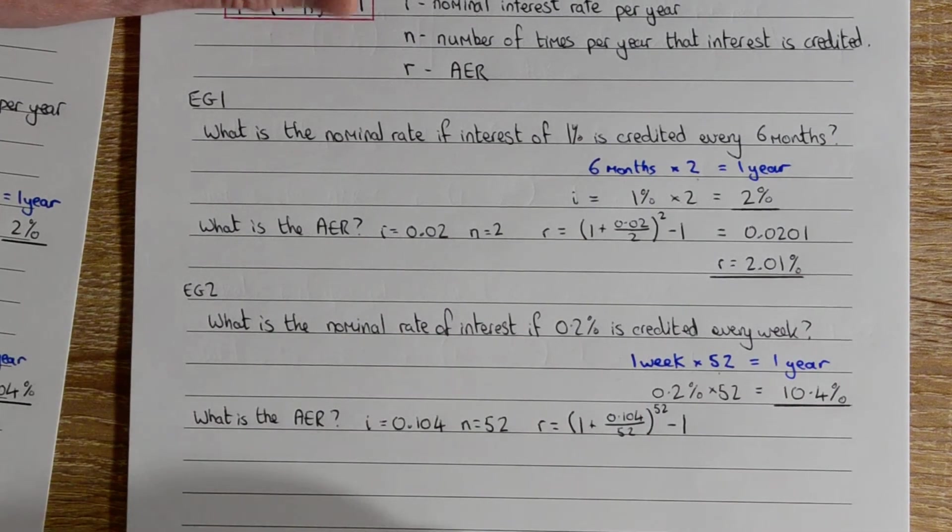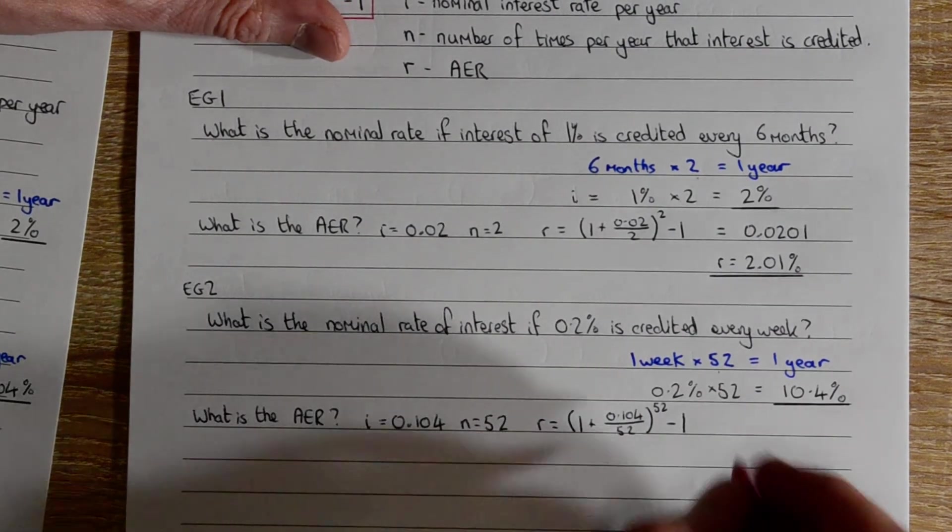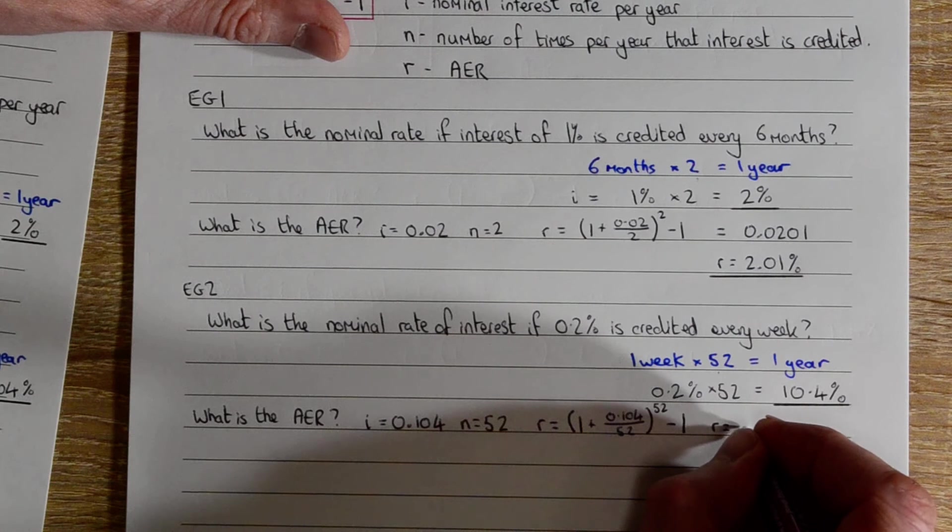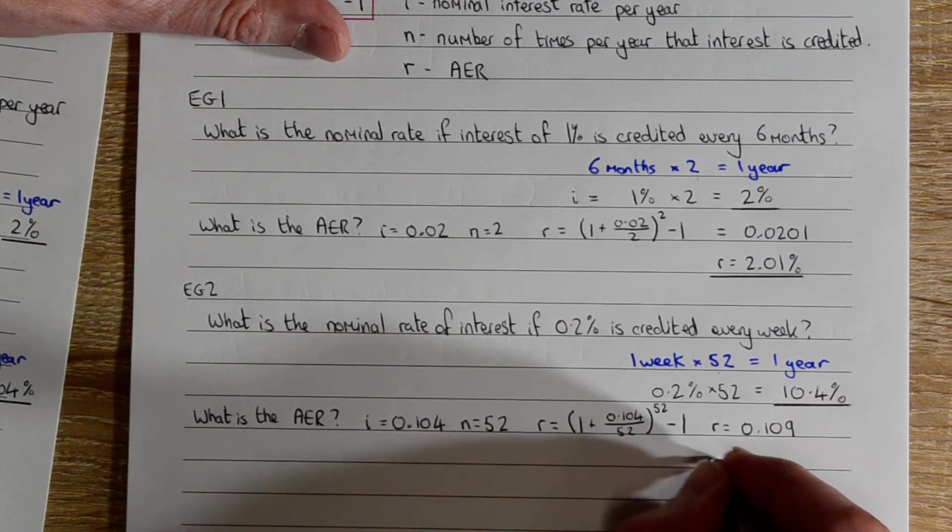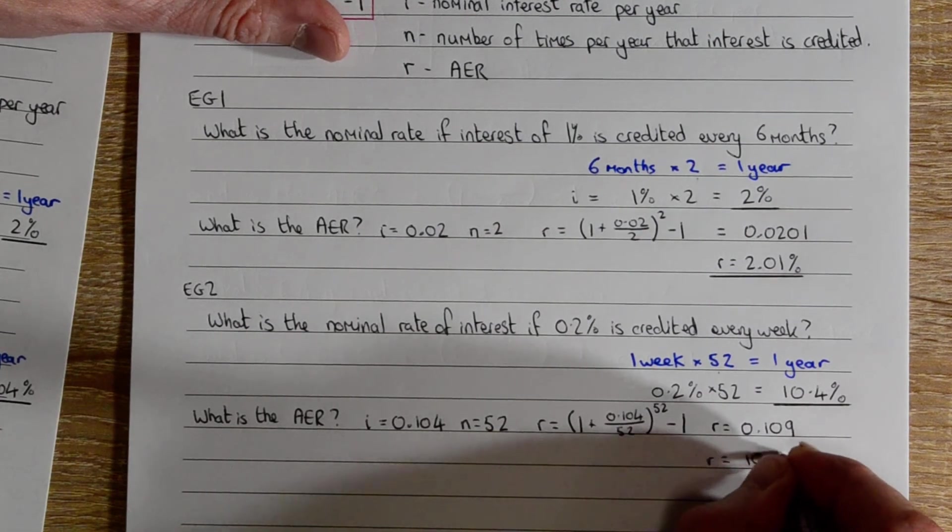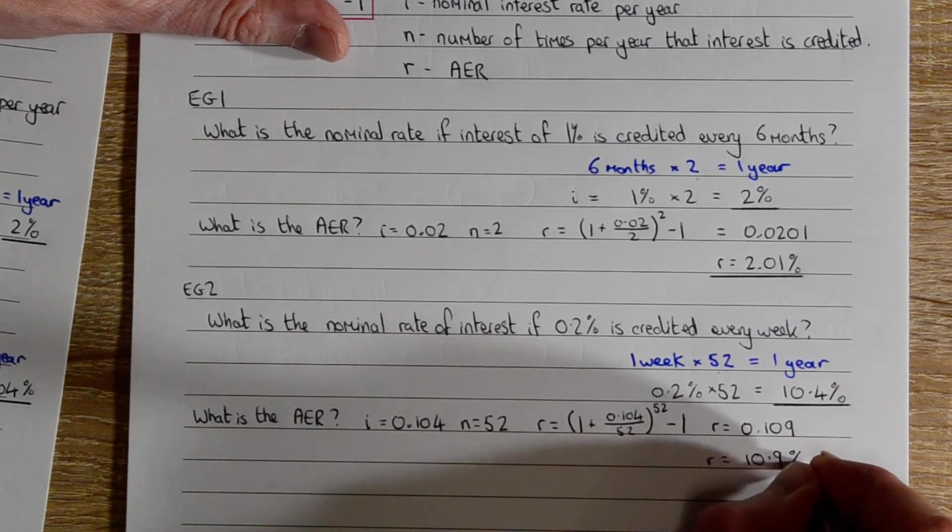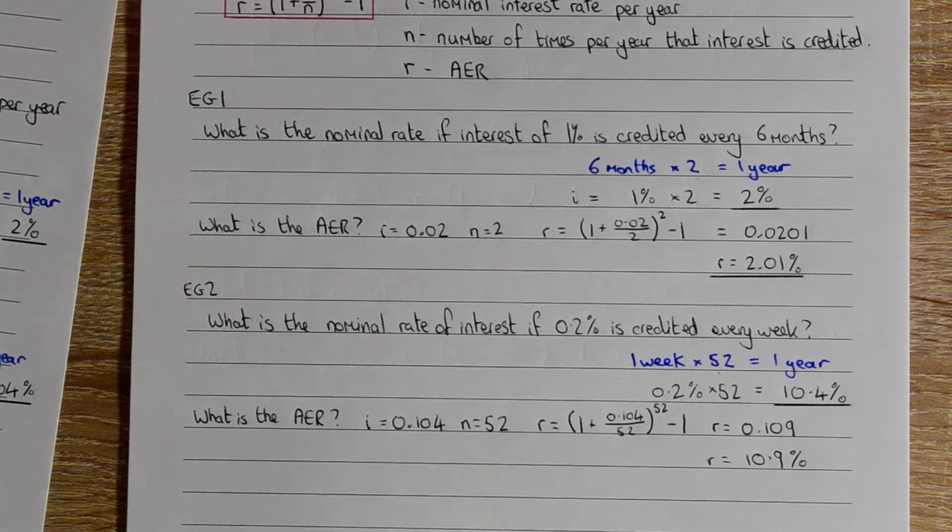So we can calculate R. So on to your calculators: R equals 0.09, which is 9% as a percentage.